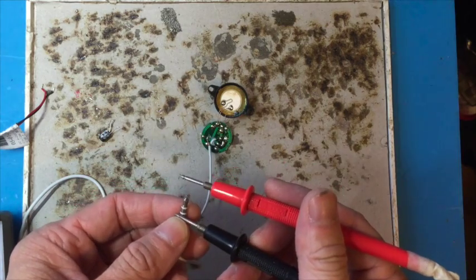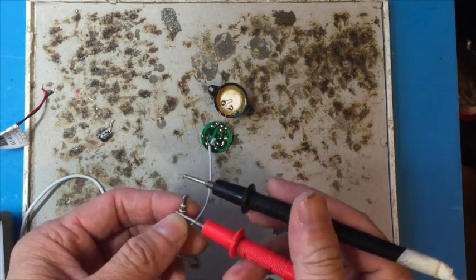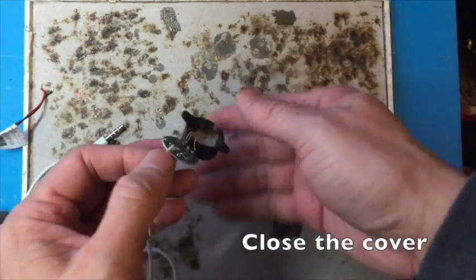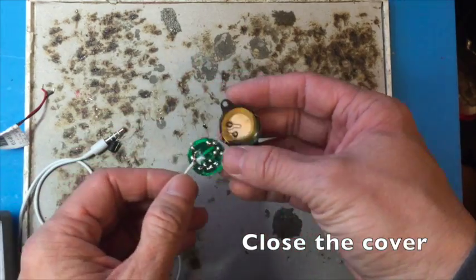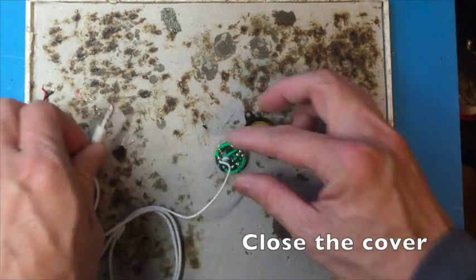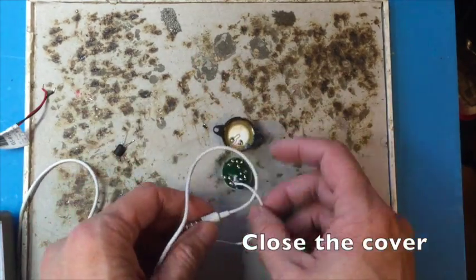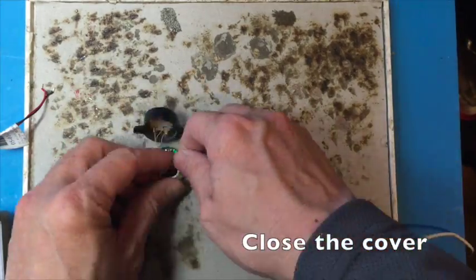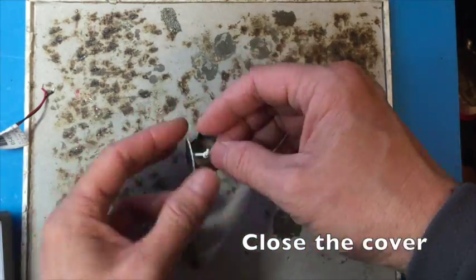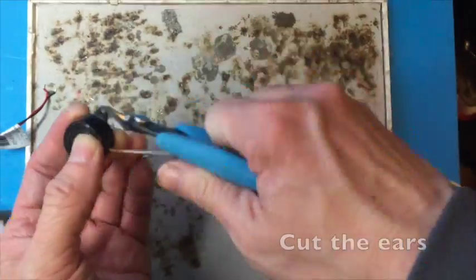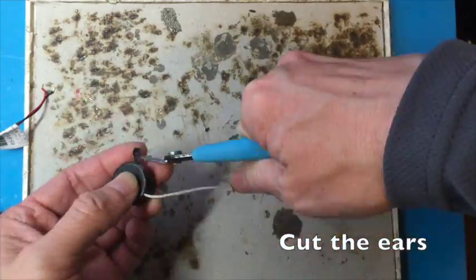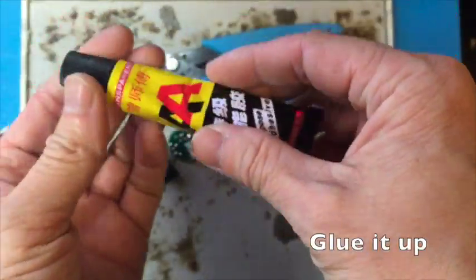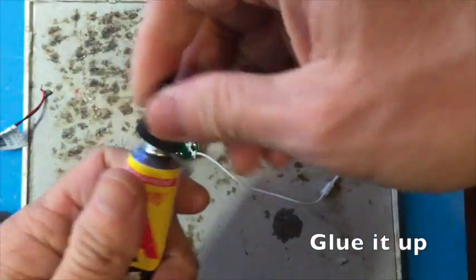Once you finish testing, if there's no sound, you have to switch the polarity and test again. So that's it, now we can seal it up. And just to make sure the lead doesn't get pulled out, we can make a small tiny knot and seal it up.